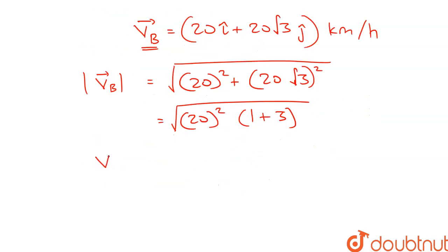The magnitude of VB vector, which is the velocity of bus with respect to ground, will be 20 into 2, that is 40 kilometers per hour. This is the magnitude.